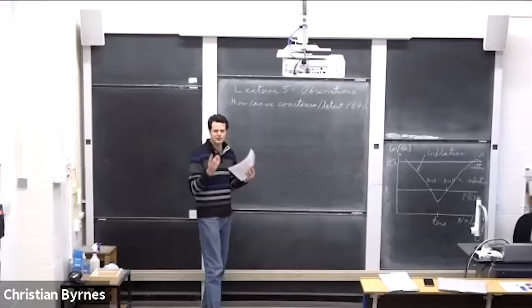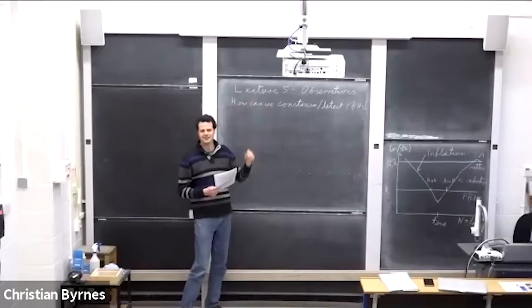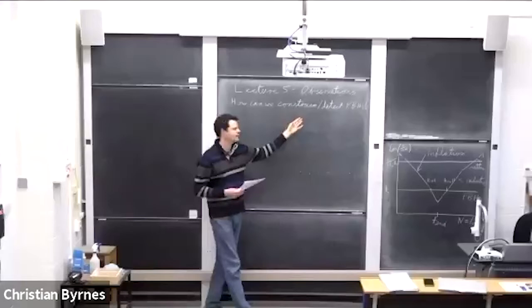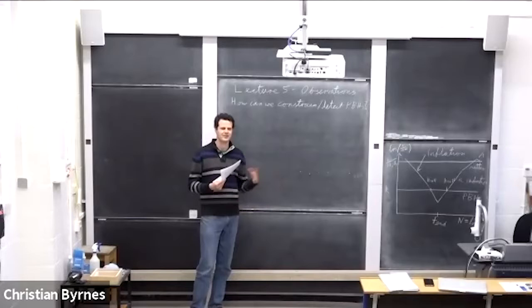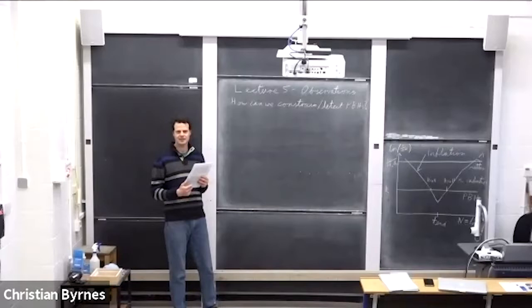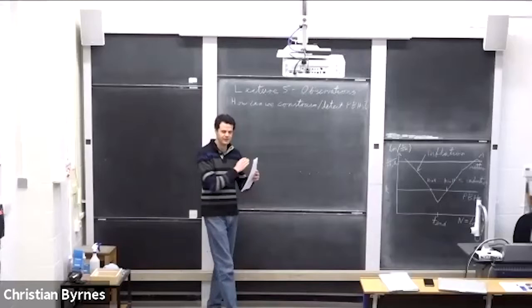This final lecture is about observations of primordial black holes — both constraints on how we constrain them and how we could hopefully detect them in the future, and also what the current hints are. Personally, I work on inflation and formation mechanisms, so I'm really not talking about anything from my own research. I'm going to give a useful and brief summary of a huge number of observational constraints.